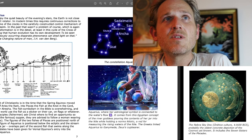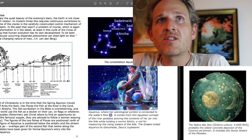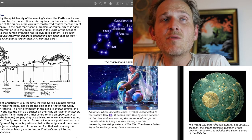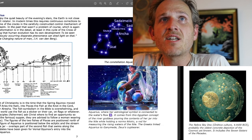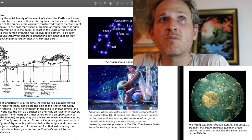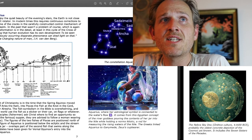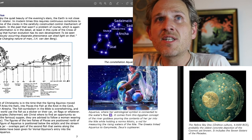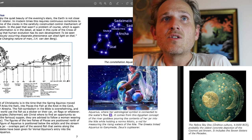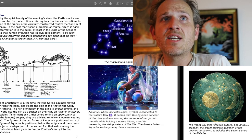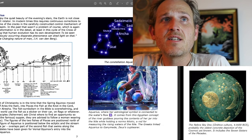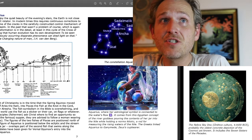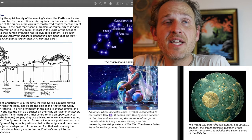Pisces to Aquarius. While we can enjoy the quiet beauty of the evening stars, the Earth is not close to being a perfect rotator. In modern times, this requires continuous corrections to our clocks. It's one of the cracks in the carefully constructed control mechanism of the seven-centered realm. In the past, that wasn't a problem, of course, which is again a proof that transformation is in the detail, at least in this cycle of the Cross of Planning, showing that human evolution has its own development. To be seen where simultaneously occurring disparate phenomena can shed light on that. And that's a quote from Metabletica. Metabletica. The Changing Nature of Man by J.H. Von Denberg.